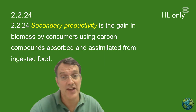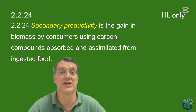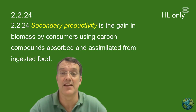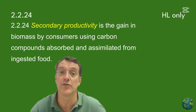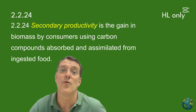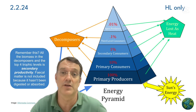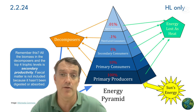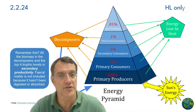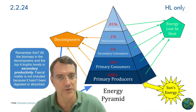Secondary productivity represents the gain in biomass by consumers when they use the carbon compounds absorbed from their food, which was produced by the producers.